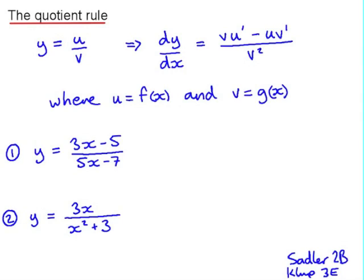The second type of function we're differentiating is a quotient. So this time y is one function of x divided by another function of x. Using the u/v notation, u is f of x and v is g of x. When we differentiate y with respect to x, it's the second function multiplied by the derivative of the first, subtract the first function multiplied by the derivative of the second, all over v squared.